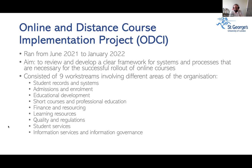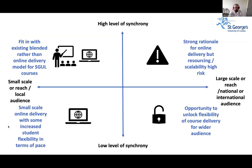Three particularly crucial areas are quality and regulations — our systems are currently set up to validate courses for face-to-face delivery, so we need to adapt quality assurance and accreditation for online and distance courses. Student services also needs to evolve: currently set up to support on-site learners in London, they must learn to support global and professional learners at a distance. And information services and governance need to provide the infrastructure and platforms to reach our broader learner community.